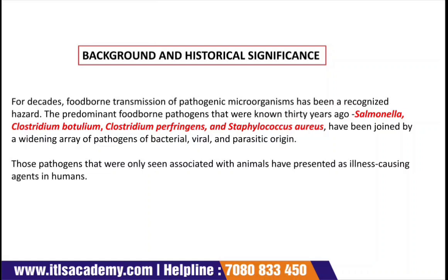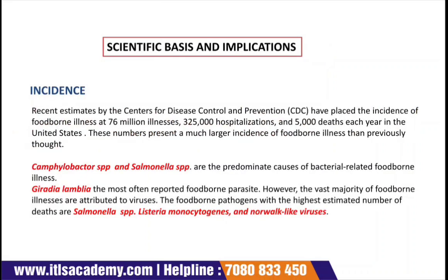Pathogens once only associated with animals have now presented as illness-causing agents in humans. Different species of Salmonella, Clostridium, and Staphylococcus aureus are all threatening to human health and are major foodborne pathogens responsible for causing foodborne illness.